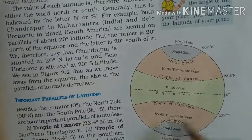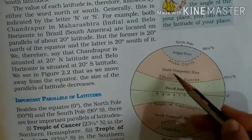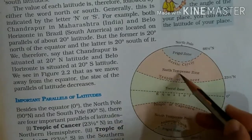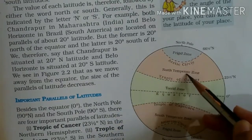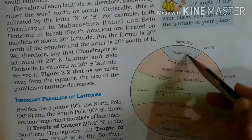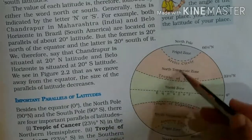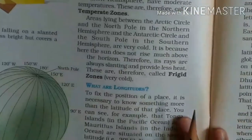यहां देख सकते हैं - यहाँ तो कम rays पहुंची इसलिए यह Torrid zone कहलाया। Torrid zone के बाद यहां का जो area है वो North Temperate zone है, यह Temperature zone है। और यह जो है यह Frigid zone कहलाता है। Pole में जो होता है वो Frigid zone होता है।